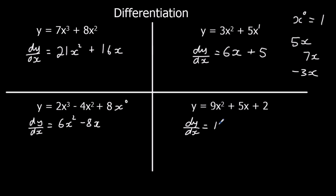And dy/dx here: 2 nines are 18, 2 minus 1 is 1. Then 1 times 5 is 5, and 1 minus 1 is 0 — so we don't write x⁰, and the constant 2 disappears. So whenever you've got something times x, it just goes to that something; and whenever you've got a constant, it disappears.